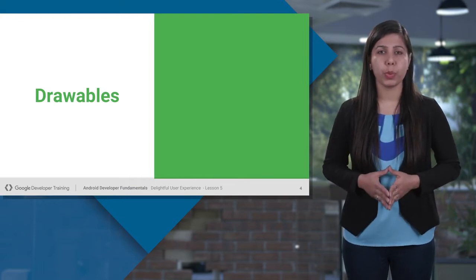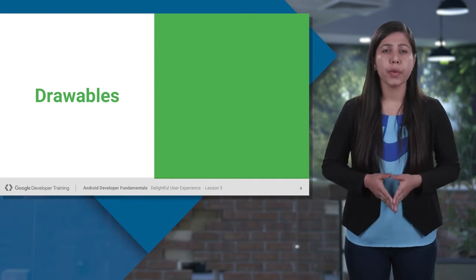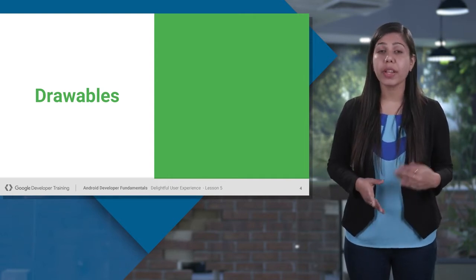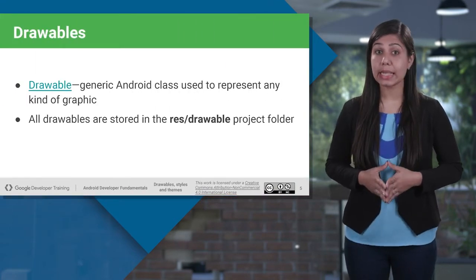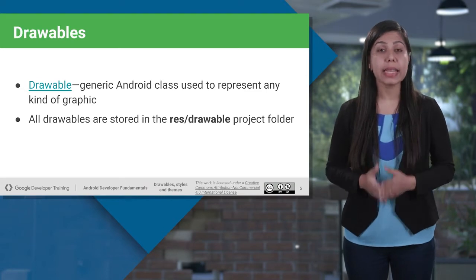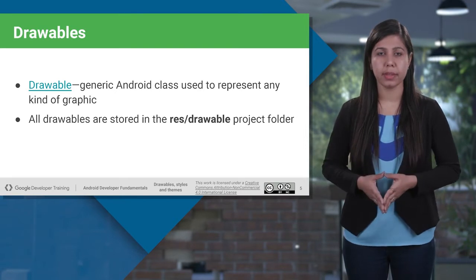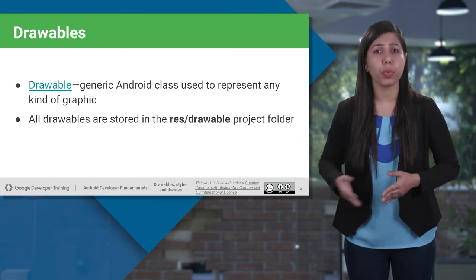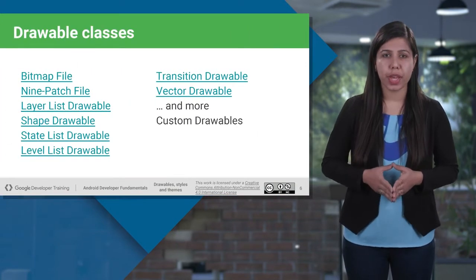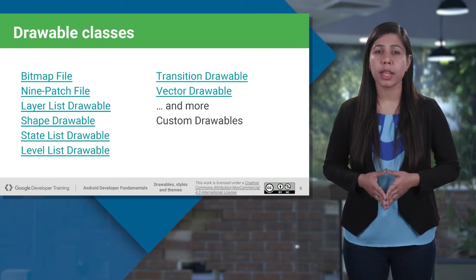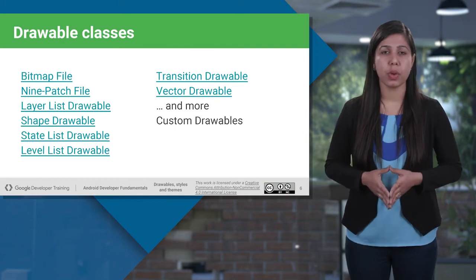Let's get started with drawables. In generic terms, a drawable represents the resource for a graphic which can be drawn to the screen, like an image or vector image — a line or a circle. In Android, it is the class which represents any kind of graphic resource. Every drawable is stored as an individual file in the drawable folder inside the resource folder. All the app's images should be placed inside it. A drawable object could be anything, as there are several types of drawable classes.